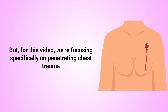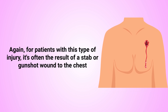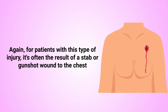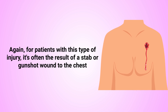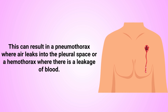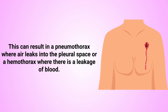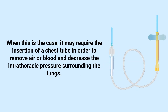For patients with penetrating chest trauma, the injury is often the result of a stab or gunshot wound to the chest. This can result in a pneumothorax, where air leaks into the pleural space, or a hemothorax, where there is a leakage of blood. When this is the case, it may require the insertion of a chest tube to remove air or blood and decrease the intrathoracic pressure surrounding the lungs.